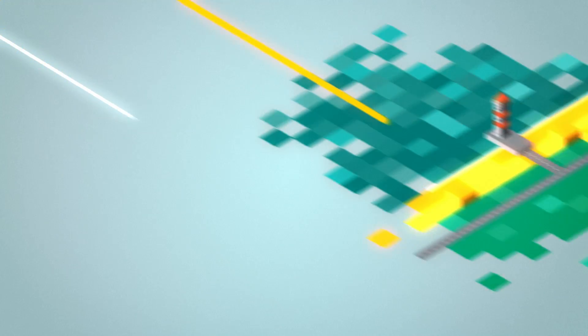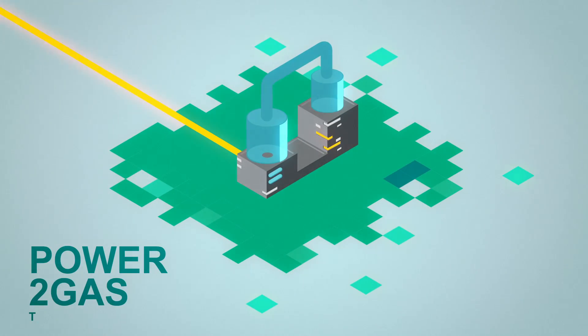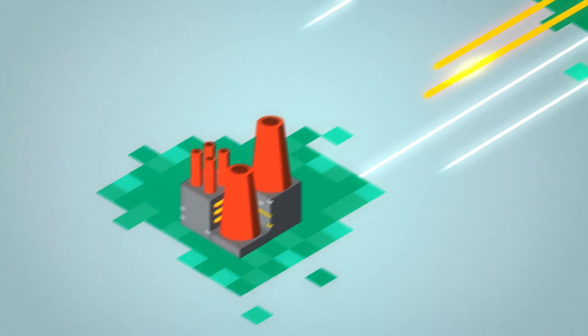What if the electric supply exceeds demand? Then we can use power-to-gas technology to convert electricity into gas, which can be stored for later or used right away in day-to-day life or in industry.